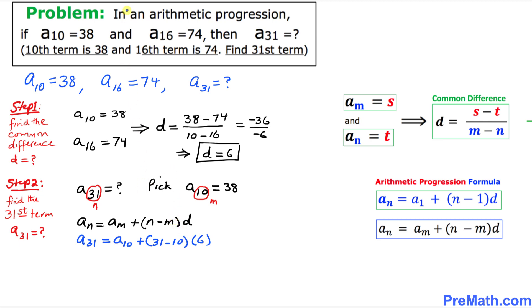Let's simplify that one. So we are going to write down a sub 31 equals we know that a sub 10 is 38, I'm going to replace this one by 38 plus, 31 take away 10 is 21 times 6. Let's simplify furthermore so that's going to be 38 plus 126.